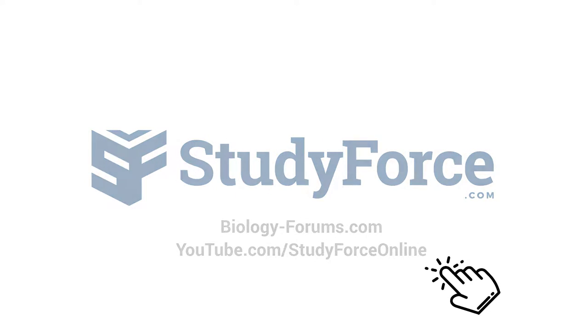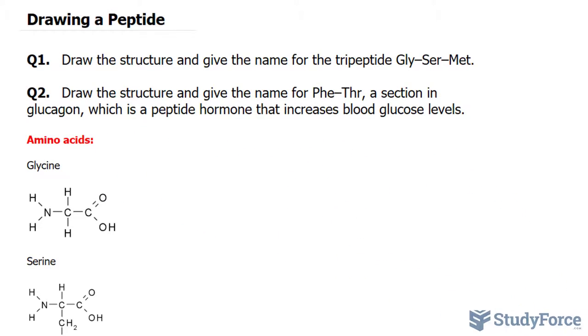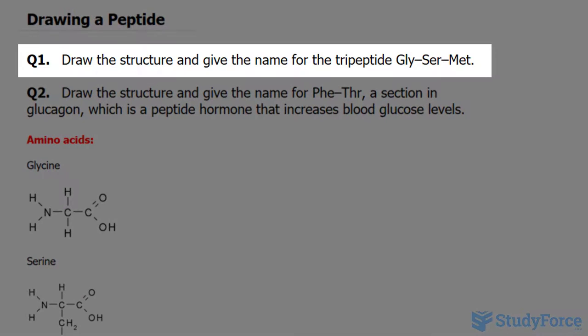In this quick lesson, we'll learn how to draw and name peptides. The first question reads: draw the structure and give the name for the tripeptide glycine serine methionine.